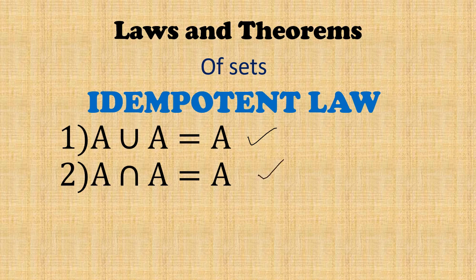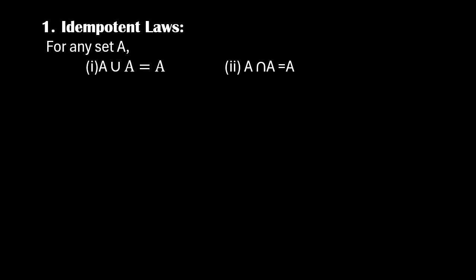So now let us move on to the actual proof. If you take any set A and you take A union A, obviously you will be getting A. This is what we need to prove. To prove something, we need to show two sets are equal. When can I say two sets are equal? Two sets are equal when A is a subset of B and B is a subset of A.